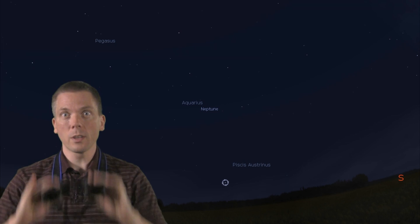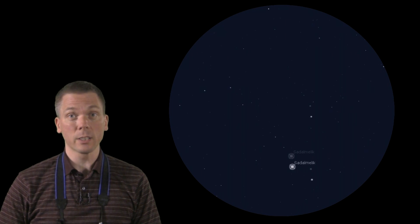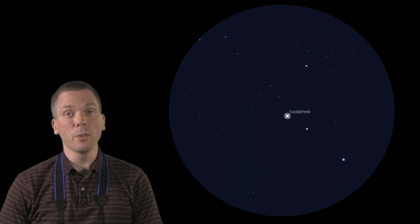So starting at Enif, use binoculars or a finderscope and drop down on a line from Enif towards Fomalhaut, to the alpha star in Aquarius, Sa'dal Melek. This is quite a distance, a good 10 degrees, so more than a binocular field of view. Under darker skies you can see this star naked eye at magnitude 3.0.